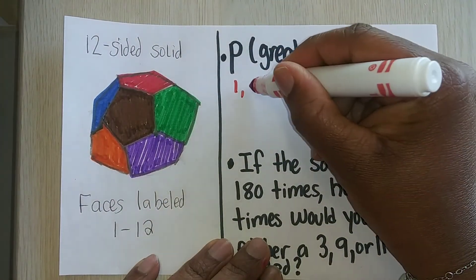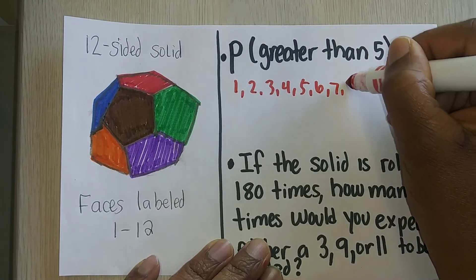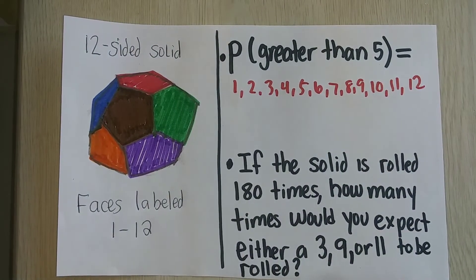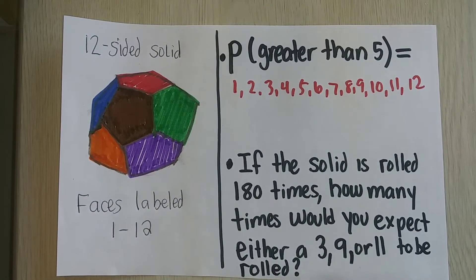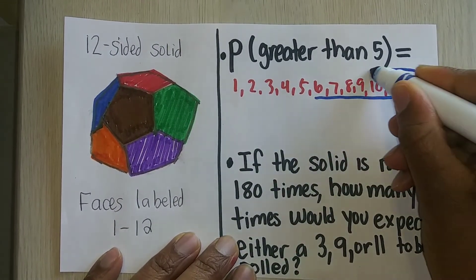Well, if I had 1 through 12, 6, 7, 8, 9, 10, 11, and 12, how many do you see that's greater than 5? Now, sometimes they say 5 or greater, but I want greater than 5, which are these right here.